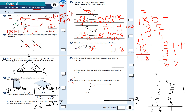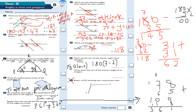Question number eight: work out the sum of the interior angles of a heptagon. A heptagon has seven sides. The formula is 180 × (n − 2), where n is the number of sides. If n equals 7, then I have 180 × (7 − 2) = 180 × 5. 5 times 8 is 40, carry the 4; 5 times 1 is 5, plus 4 is 9. So the interior angles add up to 900 degrees in a heptagon — regular or irregular.